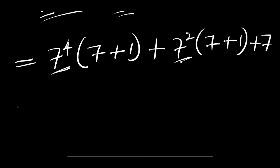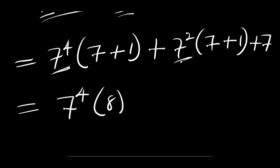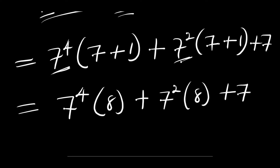Now we add what we have inside the brackets: we have 7 power 4 times 8, plus 7 power 2 times 8, plus 7.